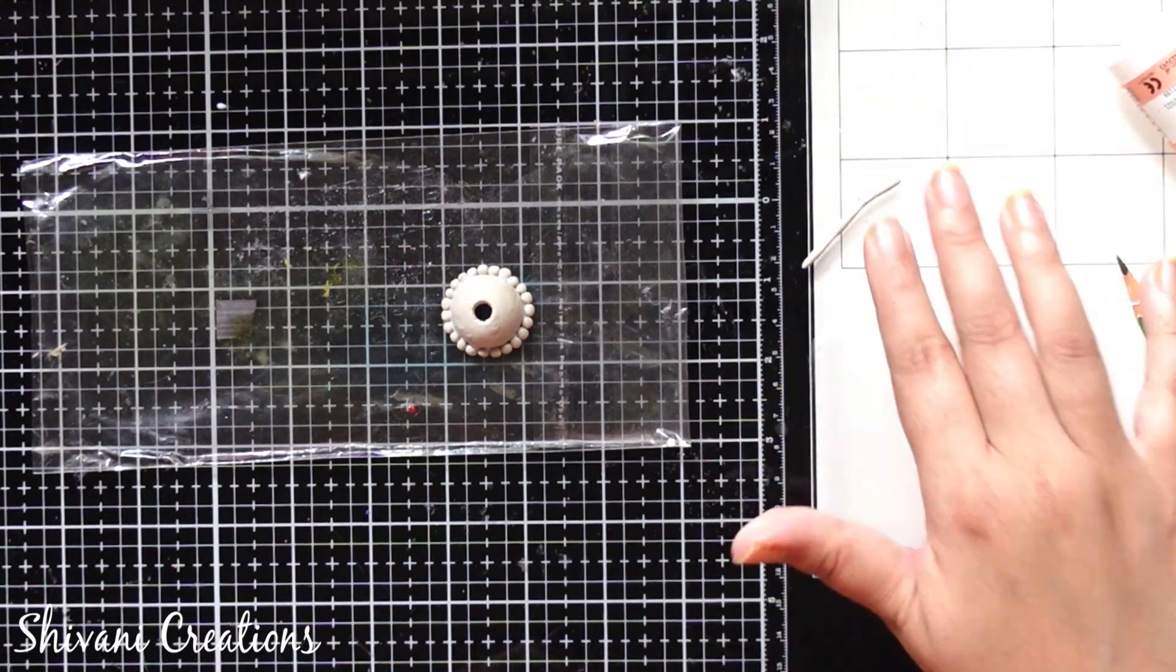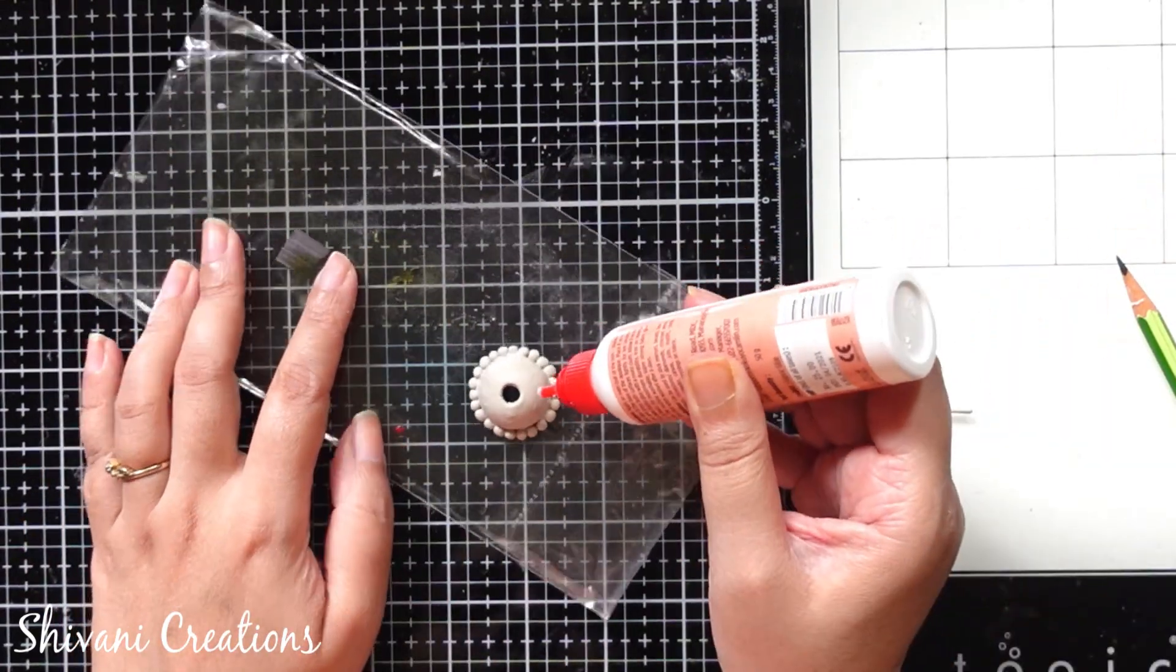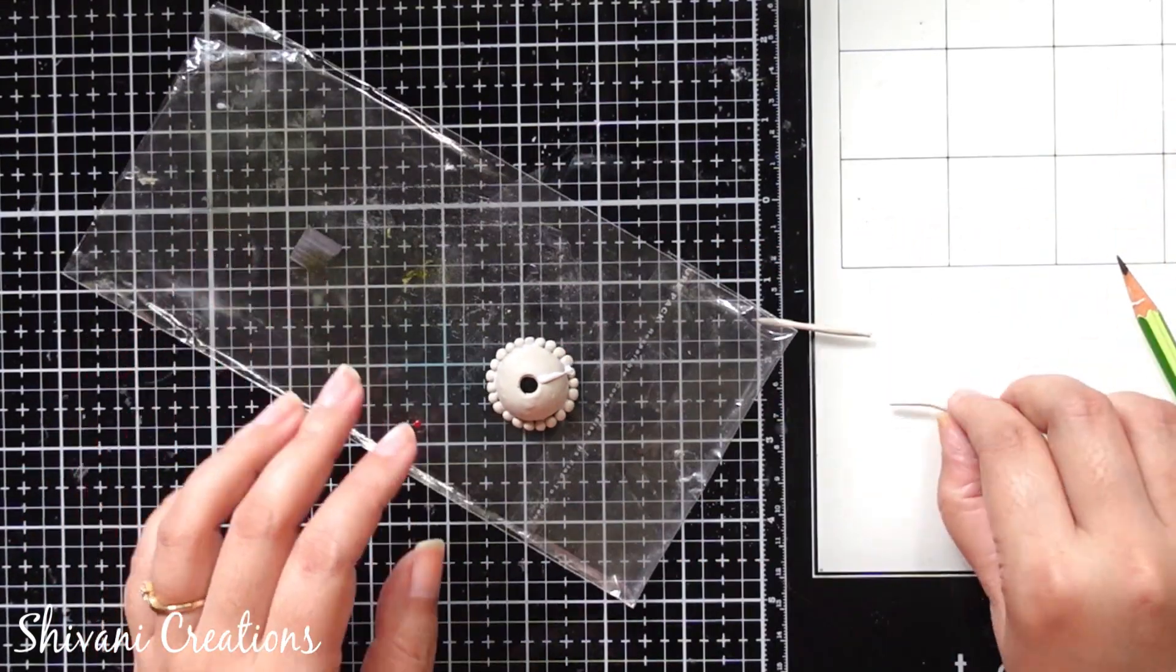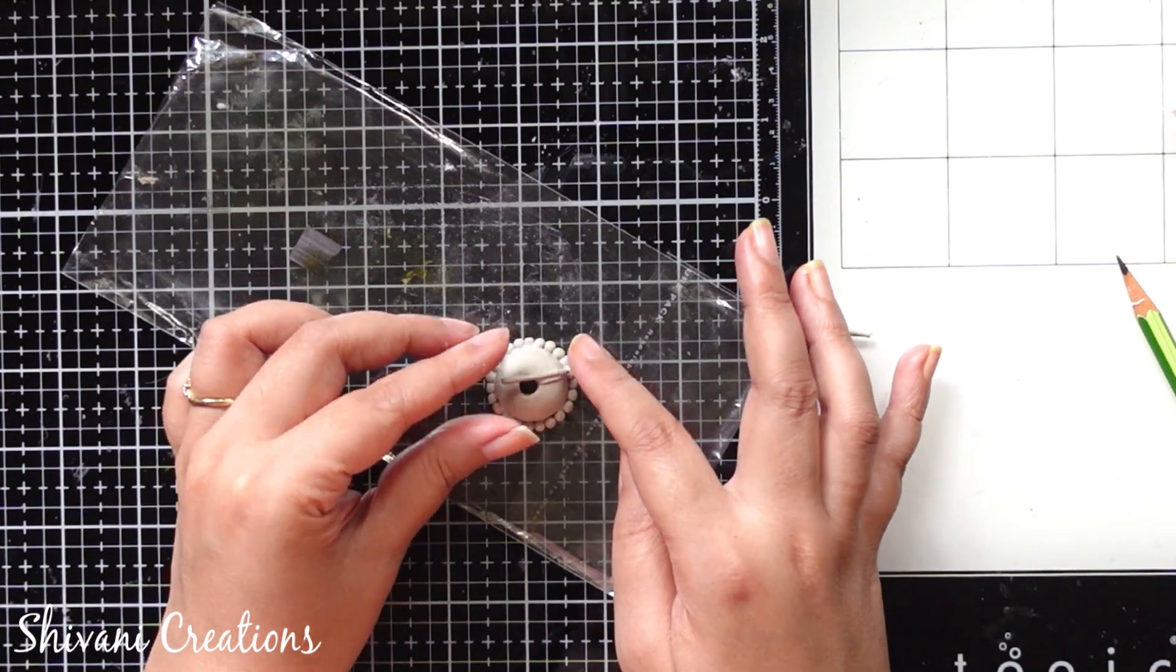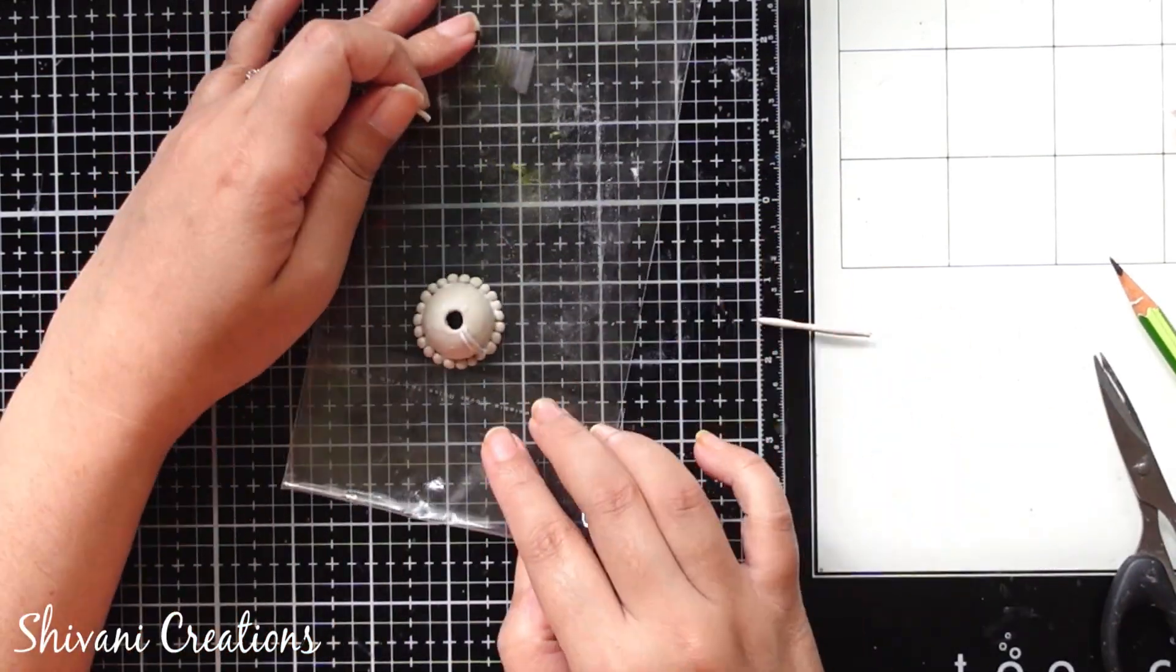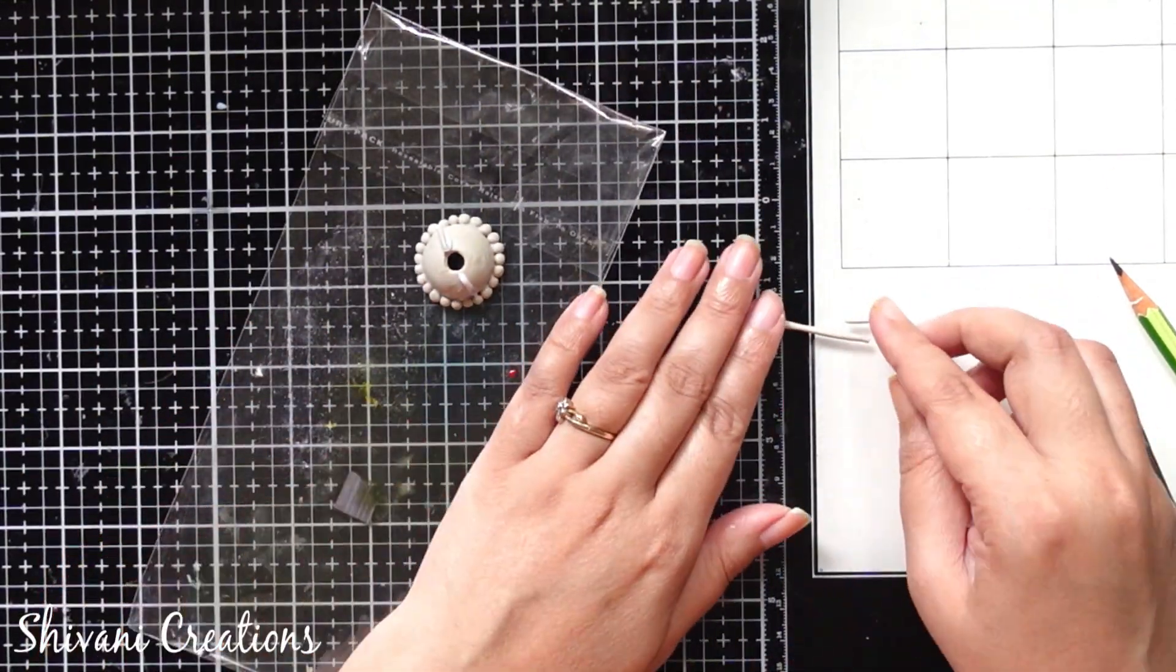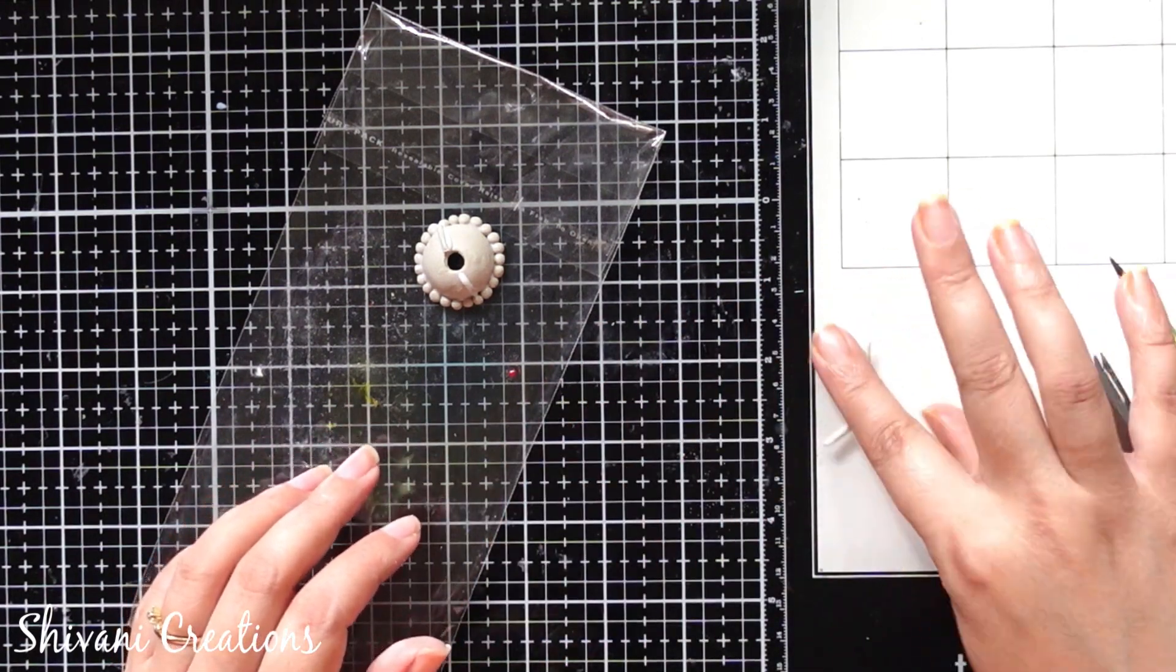And using small pipe I am just decorating like this. Now exactly in the front part of this I am adding some more pieces of pipe.